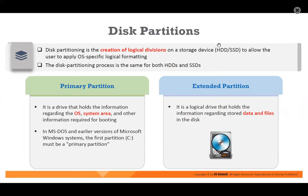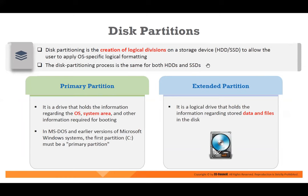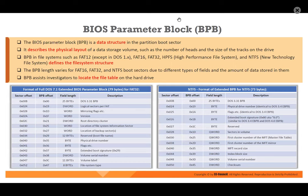Disk partition: you have primary partition and extended partition. The primary partition is where you store the OS system area — we call it C drive. The extended partition is like D and E drives. The BIOS parameter block is a data structure of the partition boot sector that defines the file system structure and logs the file table.